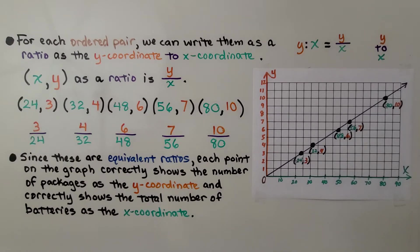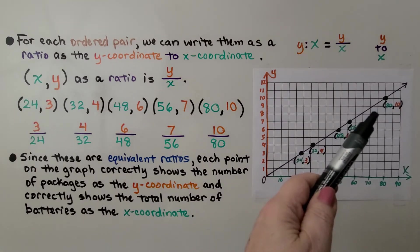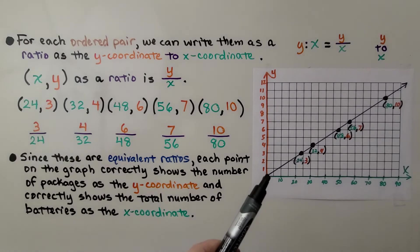And since these are equivalent ratios, each point on the graph correctly shows the number of packages as the y coordinate and correctly shows the total number of batteries as the x coordinate. And did you know that any point that falls on this line would be a correct equivalent ratio for these other ones?